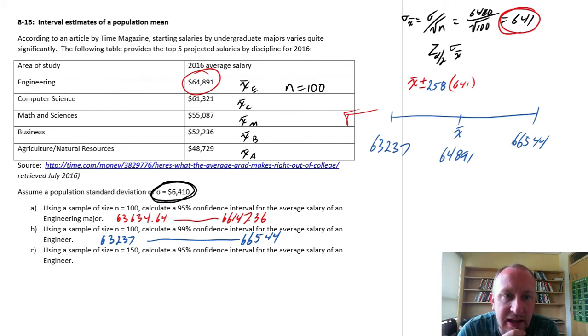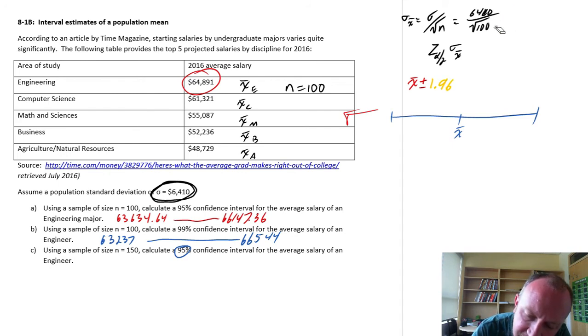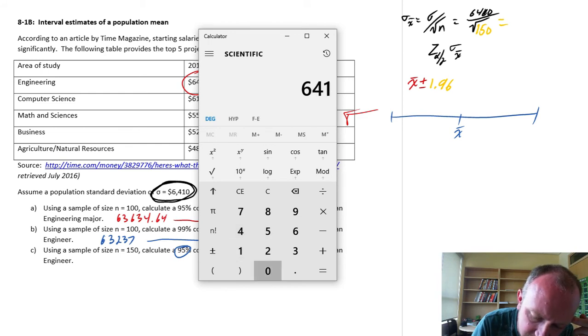Now we're going to use, oh look at that, engineers again. But I'm increasing the sample size. So we're going to look at sort of the same exercise as part A. But now we're going to change the sample size, which means that relative to our part A calculations, we're back to 95%. So what that means is that our critical value is back to 1.96. But our standard error changes now. So instead of being the square root of 100, this is now the square root of 150. And so what's that going to do then to our calculations? Well, let's find out. $6,410 divided by square root of 150. So $523.